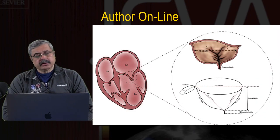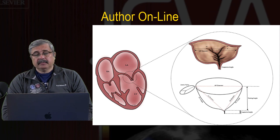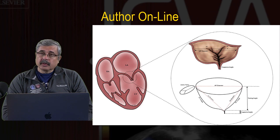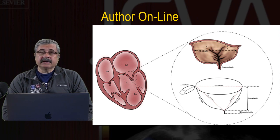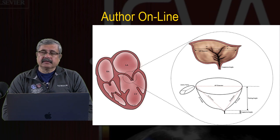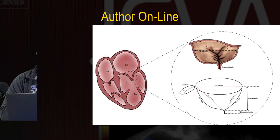My first question to Dr. Sharkey is that this article talks a lot about mitral valve coaptation zone, coaptation area, and its correlation with developing mitral regurgitation and indices of mitral valve remodeling. What is this coaptation zone, and what is its correlation with developing the risk of mitral regurgitation?